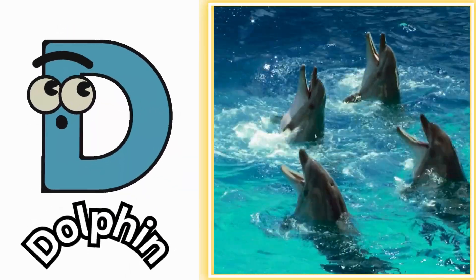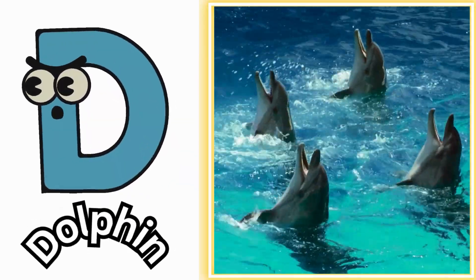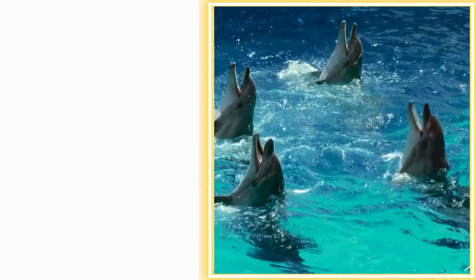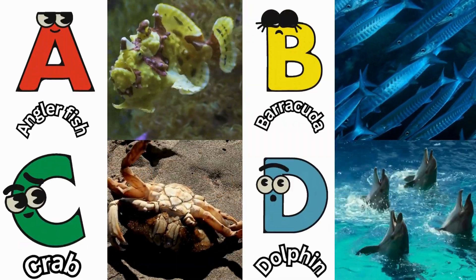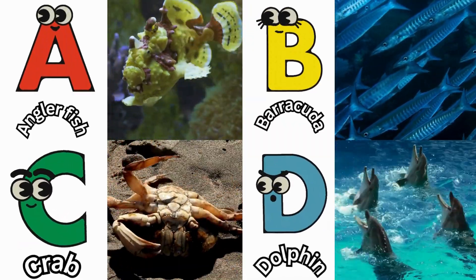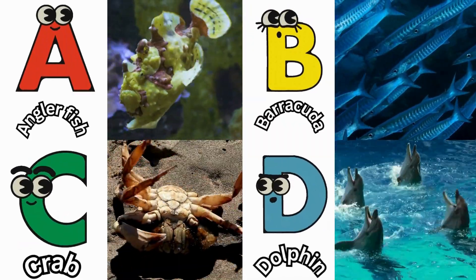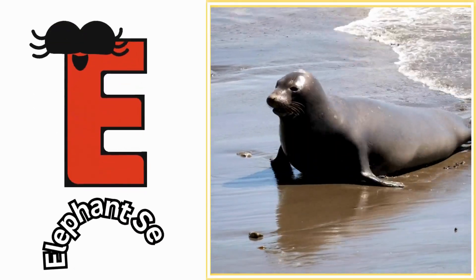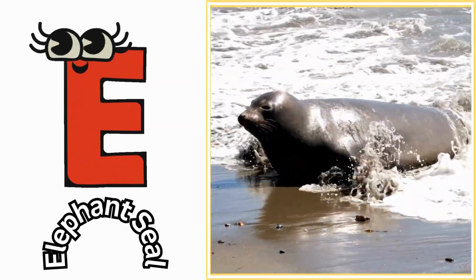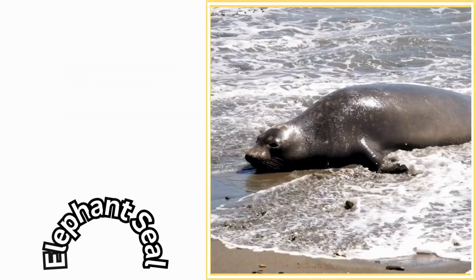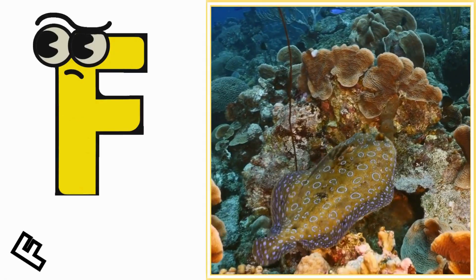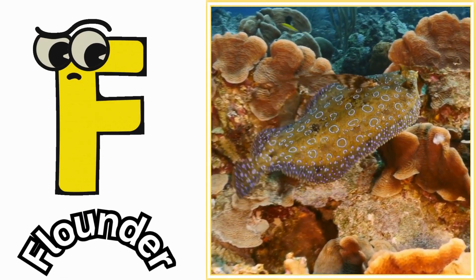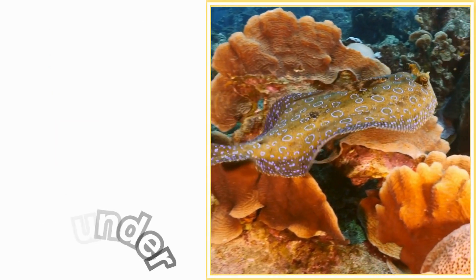D is for dolphin. Duh, dolphin. E is for elephant seal. Ah, elephant seal. F is for flounder. Fuh, flounder.